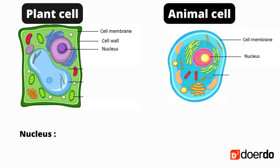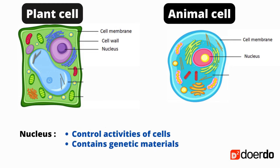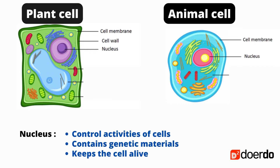Both plant cells and animal cells have a nucleus. The nucleus controls the activities of the cell, contains genetic material, and mainly keeps the cell alive.